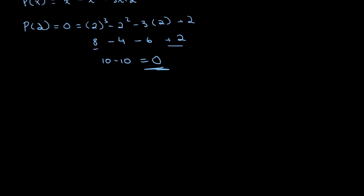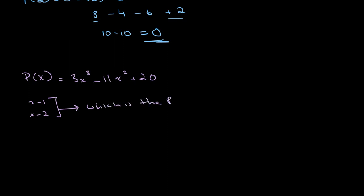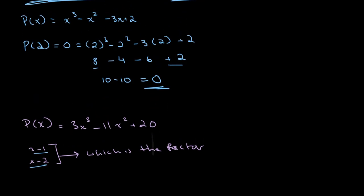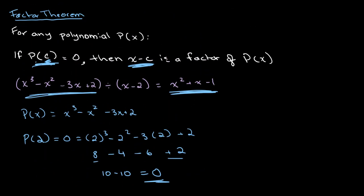So for example, if we have p of x and it's equal to 3x cubed minus 11x squared plus 20, and we want to find out if x minus 1 or x minus 2 is a factor — a much longer way to solve this would be to do long division with both x minus 1 and x minus 2 and to see what the remainder is. A much quicker way is to use the factor theorem. So if x minus c, or in this case x minus 1 or x minus 2, is a factor, then p of c, or p of 1 or 2, will equal 0.